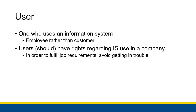In an ideal scenario, users should have rights regarding information system use in a company. You have rights specifically because you're relying on an information system in order to fulfill your job requirements and avoid getting in trouble for not fulfilling them. So you have the right for an information system to assist you in doing that. If the information system is failing and you're getting in trouble because your work can't be completed, that would be a violation of those rights.